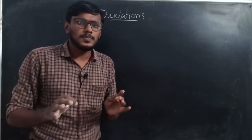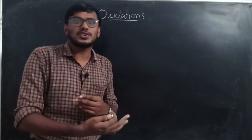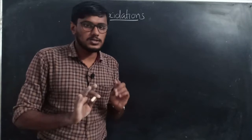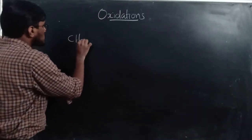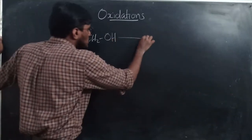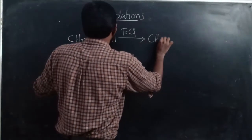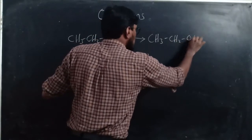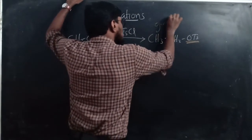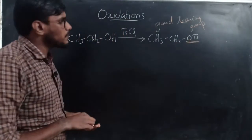Another DMSO oxidation variant: substrates with good leaving groups can undergo oxidation with DMSO in the presence of a base to give carbonyl compounds. For example, ethanol (CH₃CH₂OH) is first reacted with tosyl chloride to form the tosylate CH₃CH₂OTs. The OTs group is a good leaving group.